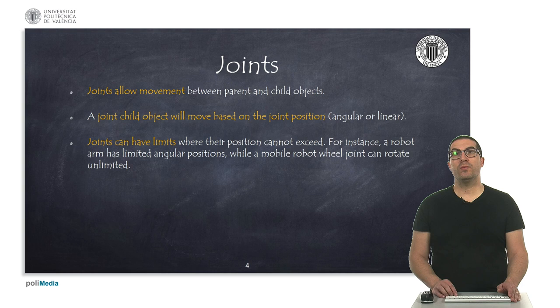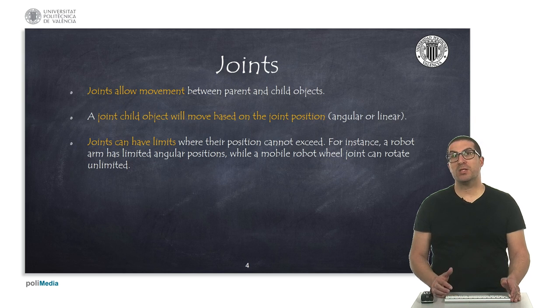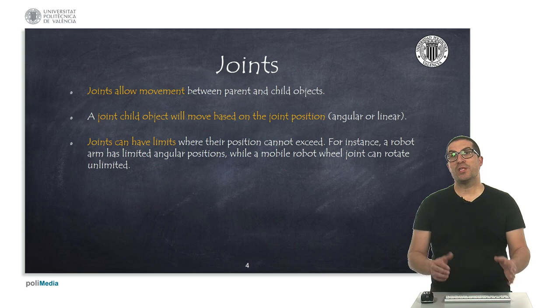Joints allow relative movement between the parent and the child object. When a hierarchy relationship is established between a joint and an object, it will move according to the position of the joint. In the case of an articulated robot arm, the robot links move according to its joint position.